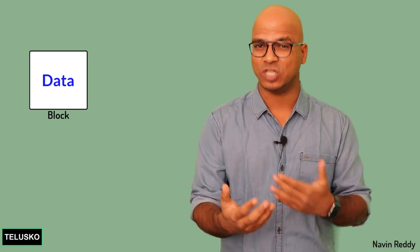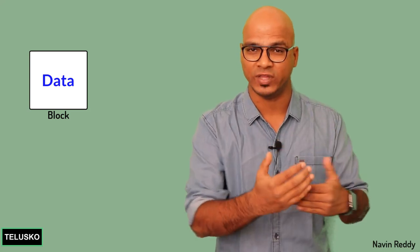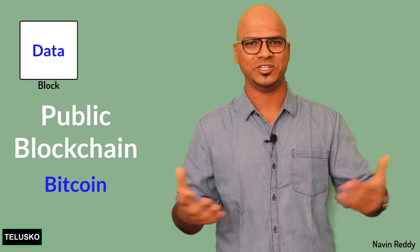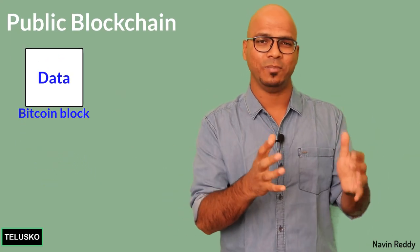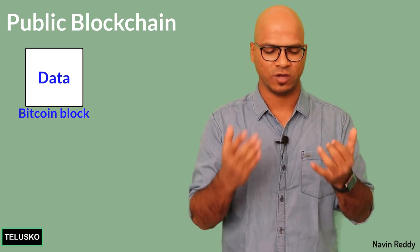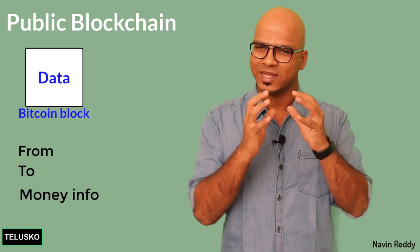When you talk about a block in blockchain, it has data. The kind of data depends on the type of blockchain — different blockchains have different data. One very famous blockchain is the public blockchain, of which Bitcoin is the example — the first blockchain implementation. Since Bitcoin is used to send money, a Bitcoin block will contain: sender, receiver, and the amount.